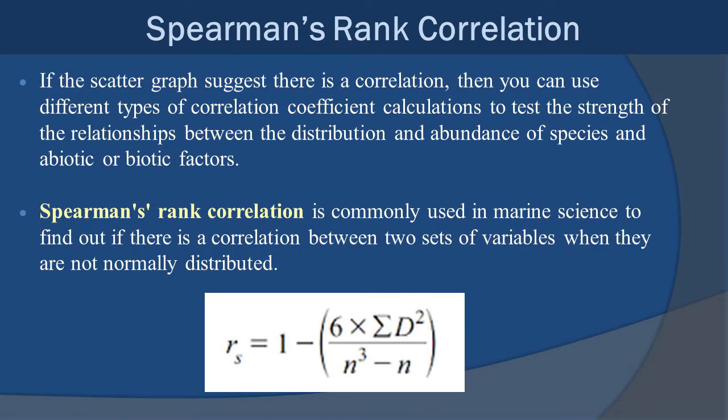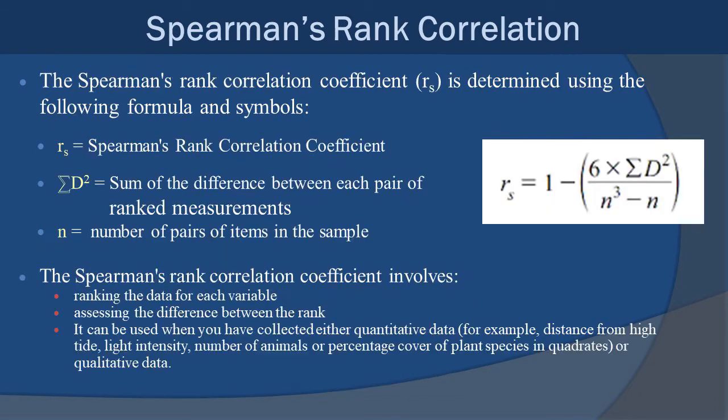If the scatter graph that we were just looking at suggests that there is a correlation, then you can use different types of correlation coefficient calculations to test the strength of the relationship between the distribution and abundance of a species, or an abiotic or biotic factor. There are a couple of these different types of correlations we can use. We are going to focus on the Spearman's rank correlation, which is commonly used in marine science to find if there is a correlation between two sets of variables when they are not normally distributed. And here you can see the equation for the correlation that we're going to look at. I know sometimes the equations like this can be a little bit scary, but I'm going to tell you right now, it's really, really easy. If you know how to add, subtract, multiply, divide, you are good to go for this. We're just going to break it down one piece at a time.